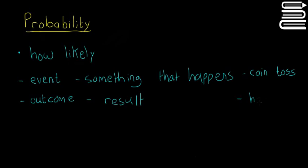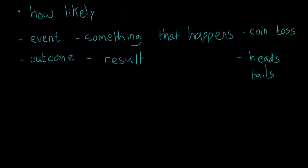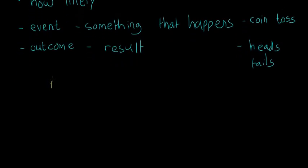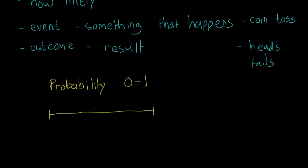So if you hear event or outcome, just think: something that will happen, and then the result of that thing. We can talk about how likely something is going to happen — kind of likely, really likely — but it's much better to put numbers on it. Probability goes from 0 to 1.